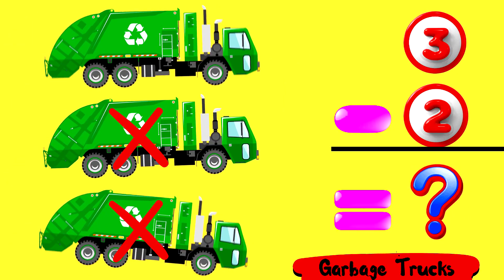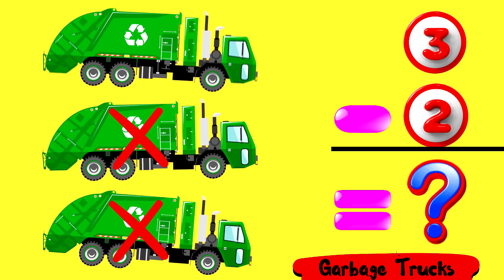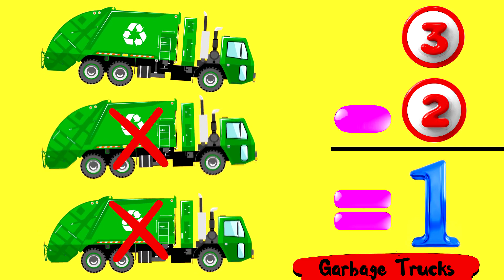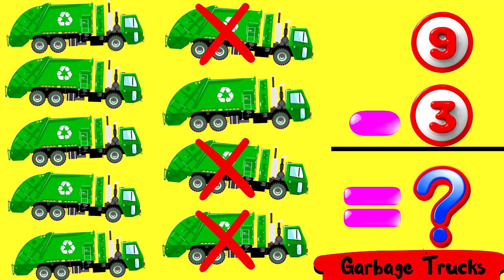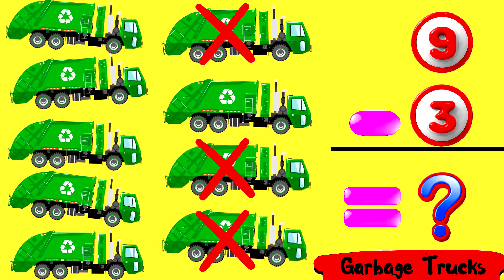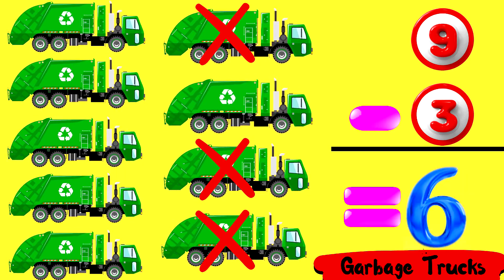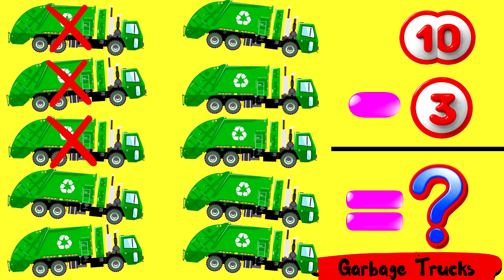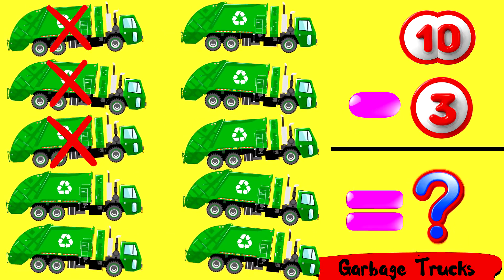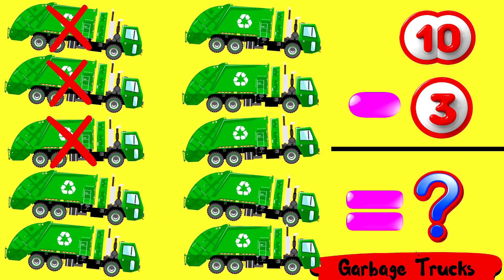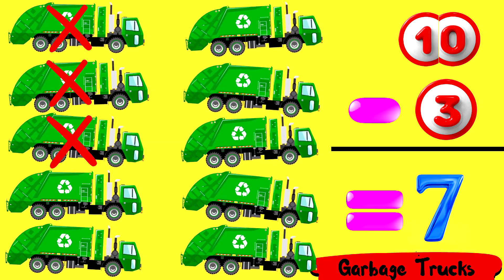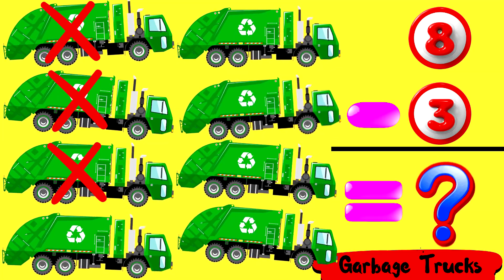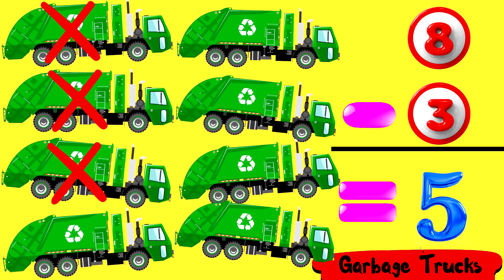Three garbage trucks minus two garbage trucks equals one garbage truck. Nine garbage trucks minus three garbage trucks equals six garbage trucks. Ten garbage trucks minus three garbage trucks equals seven garbage trucks. Eight garbage trucks minus three garbage trucks equals five garbage trucks.